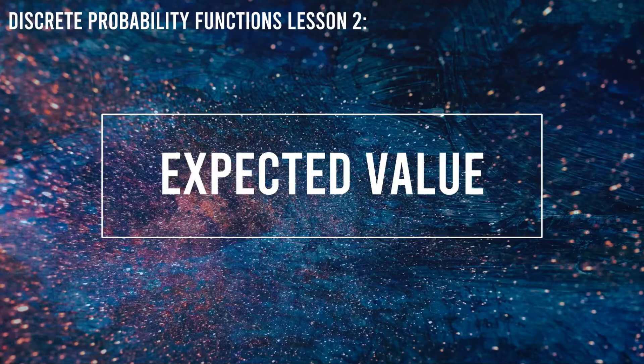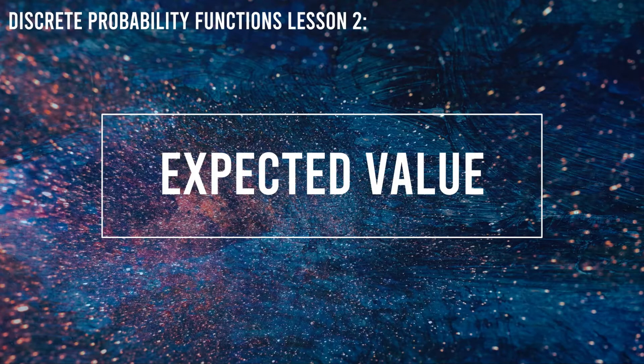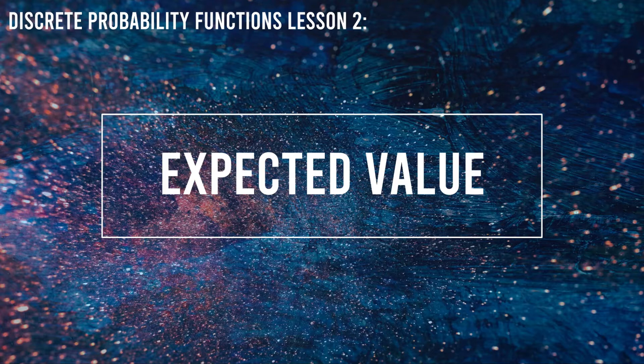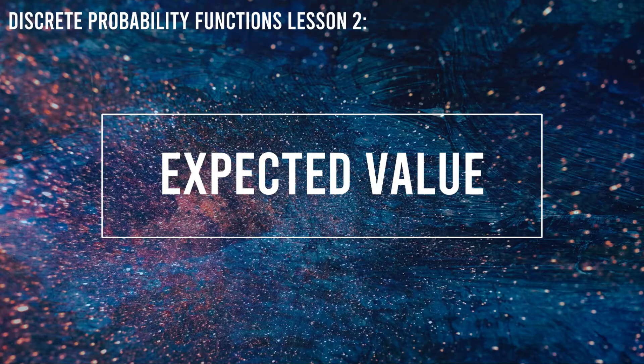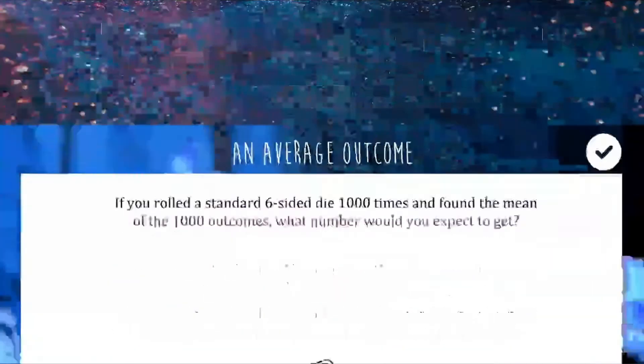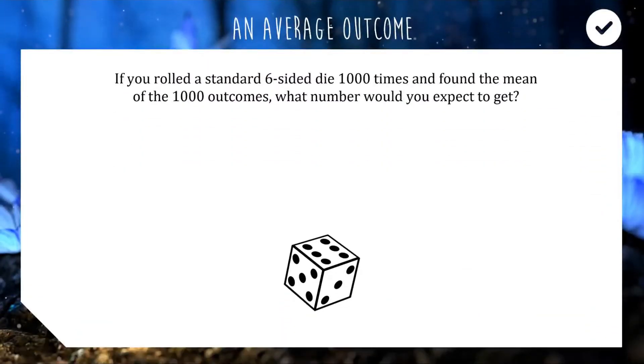Today's next lesson in the discrete probability functions topic is called expected value, which is another way of thinking about the mean of the outcomes of a discrete probability function. Let's have a look.